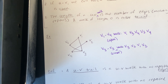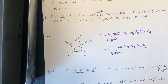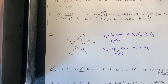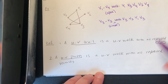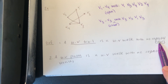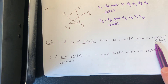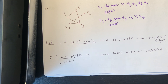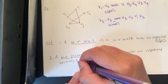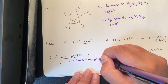In some cases it's useful to restrict walks so we don't repeat edges or vertices. A u-to-v trail is a u-to-v walk with no repeated edges — you can repeat vertices but not edges. A u-to-v path is a u-to-v walk with no repeated vertices, and since there are no repeated vertices, there can't be any repeated edges either.